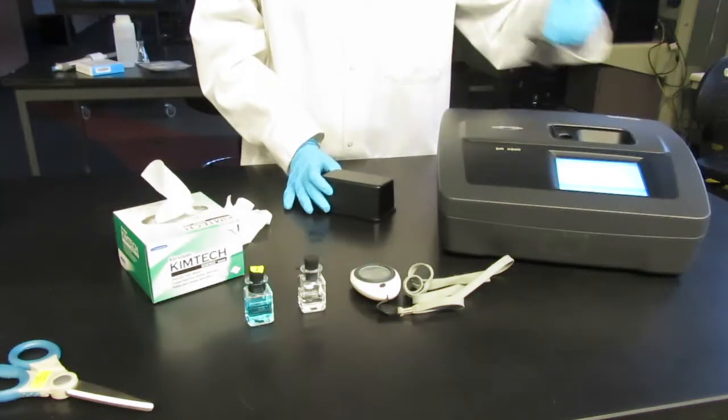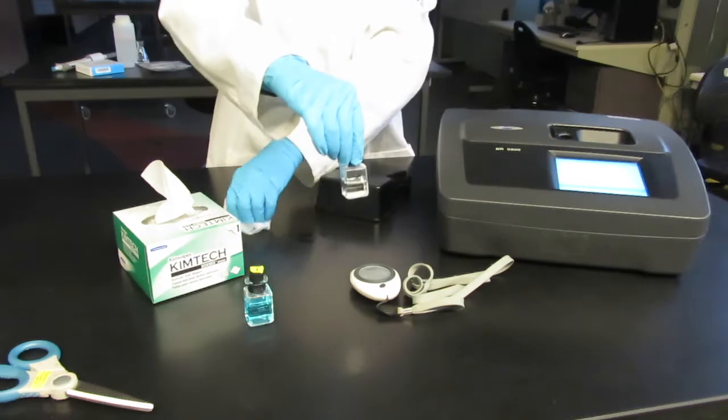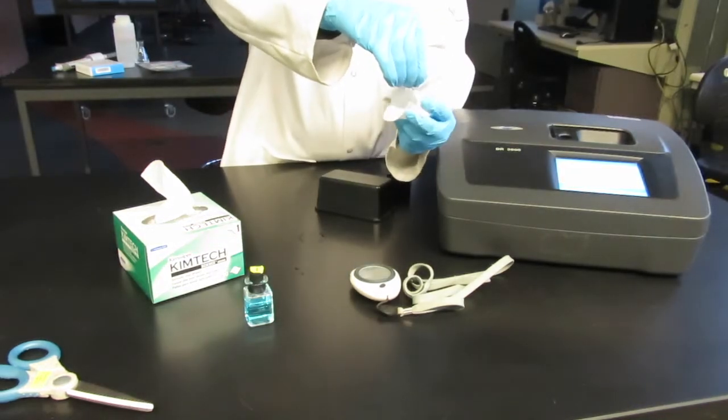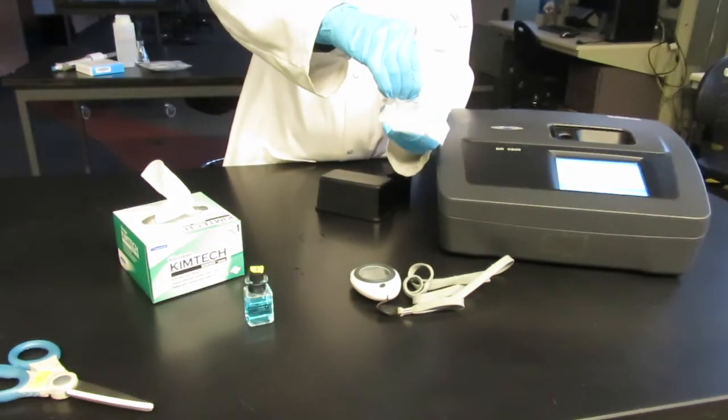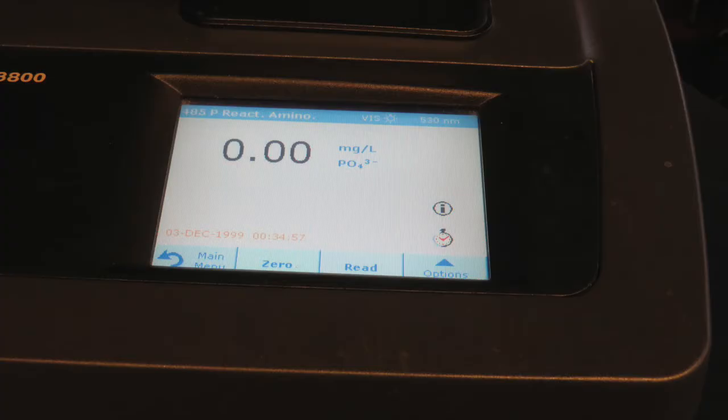After two minutes use a kim wipe to wipe your blank cuvette by holding the lip of the cuvette. Insert into the cell holder and place the light shield. Press zero to zero the instrument.